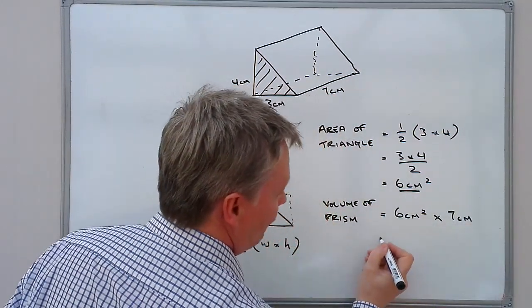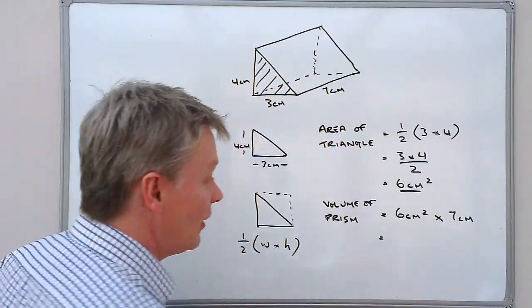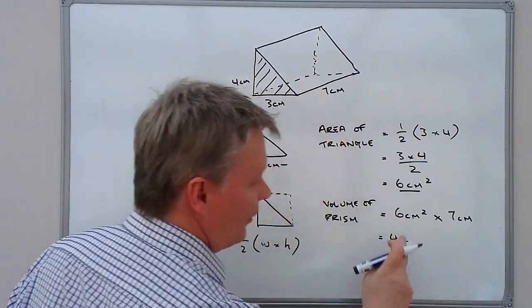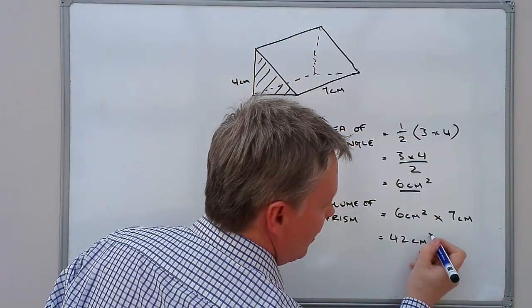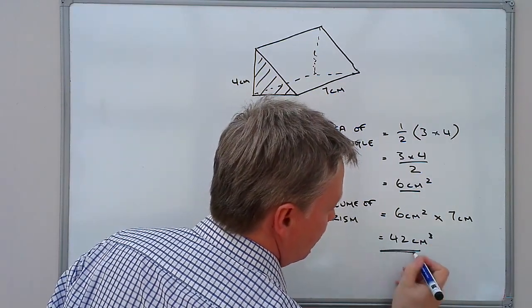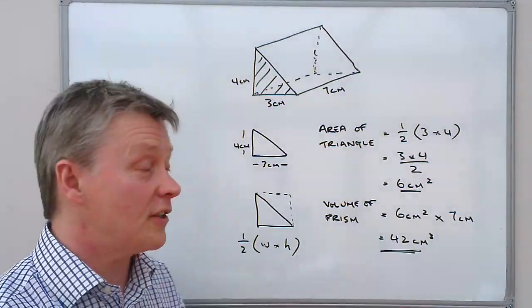So the volume of the prism is 6 times 7, which is 42, and then it's centimetres squared times centimetres, which is centimetres cubed. And that would answer the question, and that would give you four marks at GCSE.